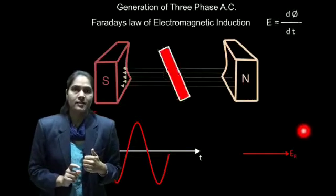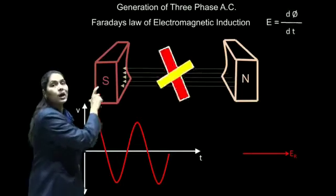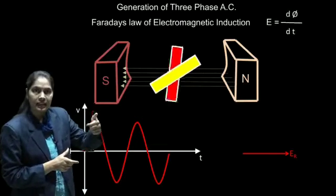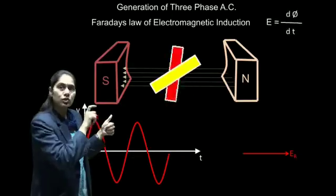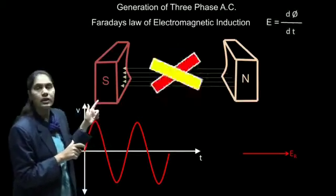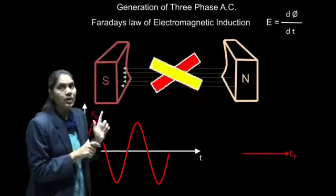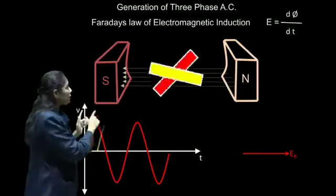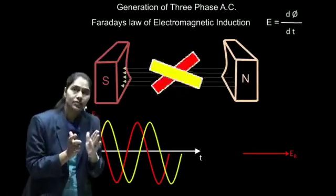We require three-phase AC supply, so we will consider one more conductor that is yellow in color. It is placed 120 degrees lagging from the first conductor — meaning the yellow conductor is lagging behind the red conductor by an angle of 120 degrees. If we keep this conductor also rotating, an EMF will get induced in this yellow conductor too. Let this induced EMF be EY. If we plot the waveform of EY, it will start at an angle of 120 degrees lagging from ER, because we placed this conductor 120 degrees lagging from ER.